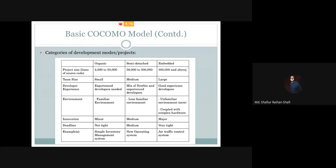At this point, the developers have a lot of experience, but the projects are less familiar and harder to develop than organic category projects. The team is of medium size and contains a mixture of newbie and experienced developers. The development environment is less familiar and stable compared to the organic mode.